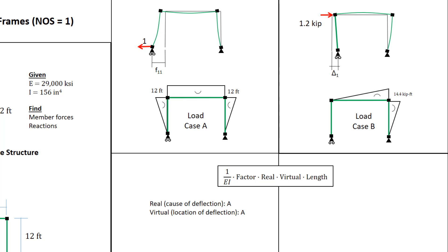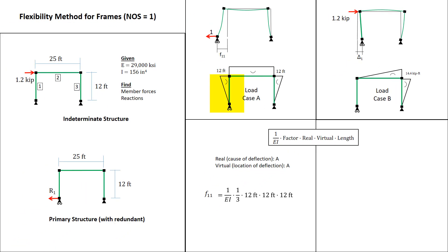The virtual moment diagram — that is the moment diagram due to the unit load at the location where we want to calculate the deflection — is also load case A. In this case, we're looking for the deflection at R1 due to a unit load at R1. For member 1, we have an integration factor of 1/3 for a triangle times a triangle, real moment of 12 feet, virtual moment of 12 feet, member length of 12 feet. The force is a unit load, so the moment ends up with units of feet — a little bit strange, but correct.